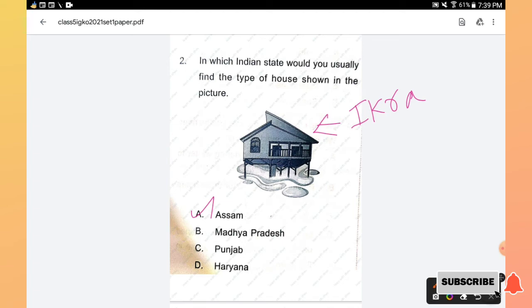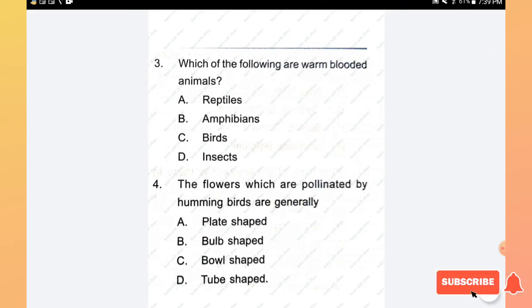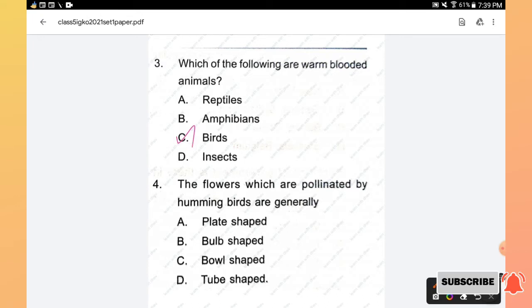That's why they build this type of houses. Hence option A is the right answer. Question number 3: Which of the following are warm-blooded animals? Reptiles, amphibians, birds, insects.